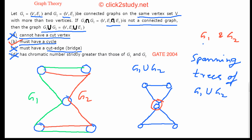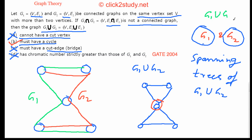A spanning tree has the property that adding just one more edge creates a cycle. G1 is a spanning tree and G2 is a spanning tree — each needs just one more edge to form a cycle. When you take their union, you are adding extra edges from each to the other. The union has more edges than any spanning tree, which guarantees the existence of a cycle.